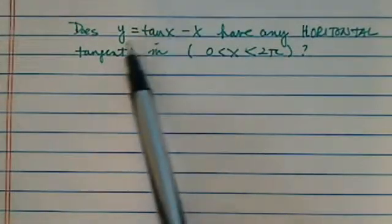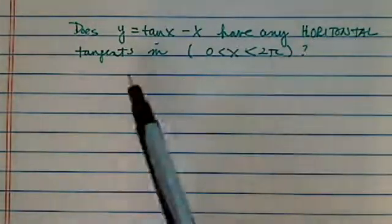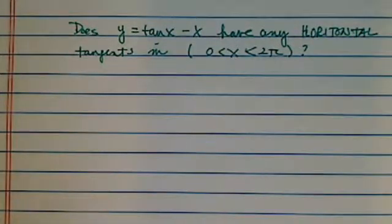This is an interesting problem. We're given a function, y = tan(x) - x, where you want to know if it has any horizontal tangents in the interval, basically 0 to 2π.